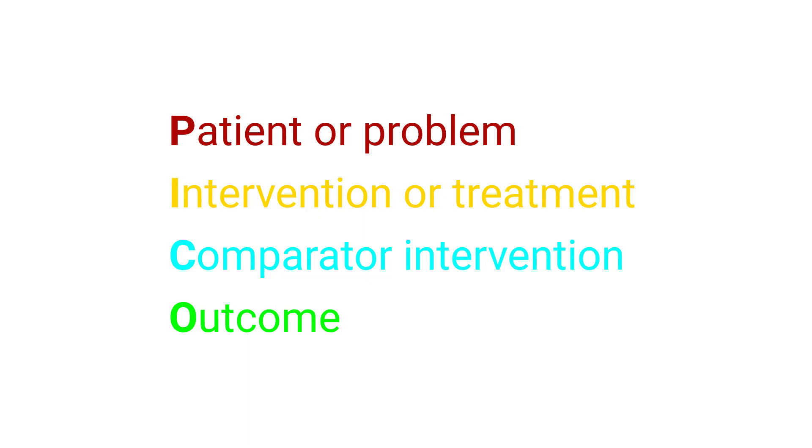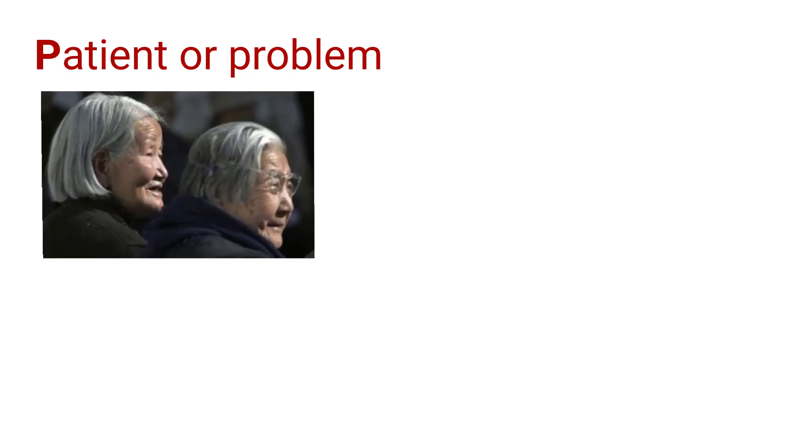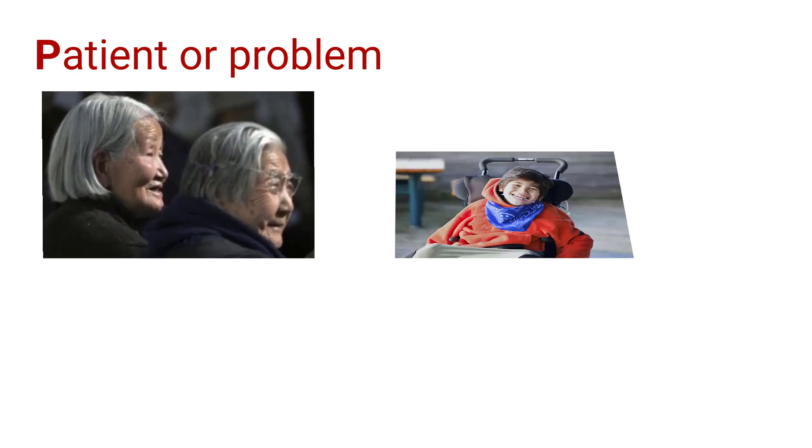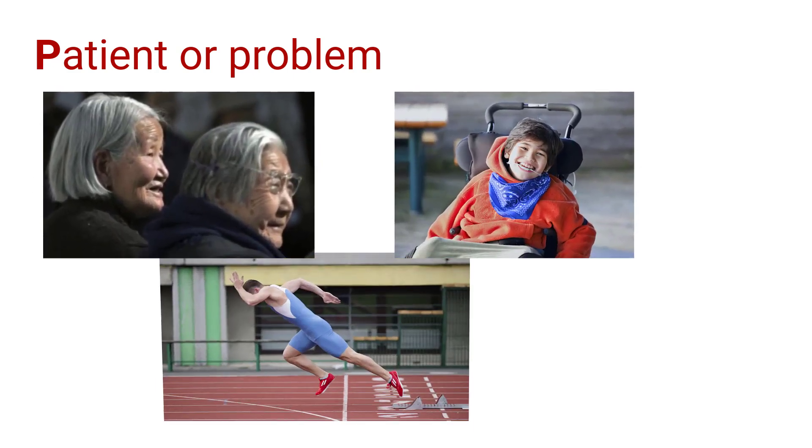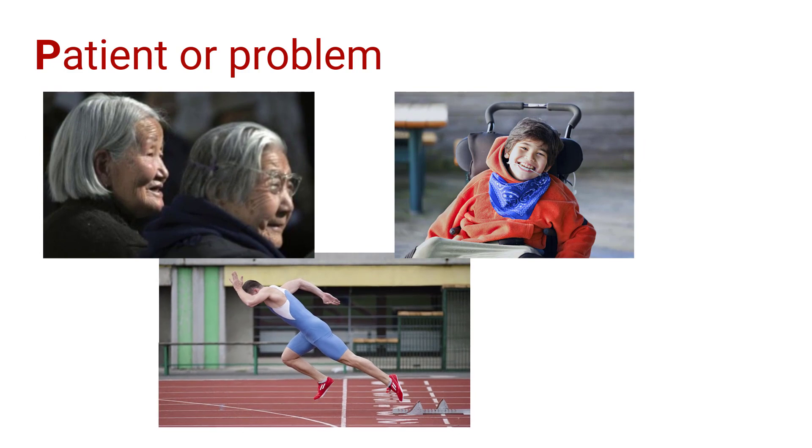Including each component will make your question clearer. The patient for a PICO question is an individual or population defined by a particular problem, condition, or characteristic. Examples are older people, children with cerebral palsy, elite athletes, or people with low back pain.